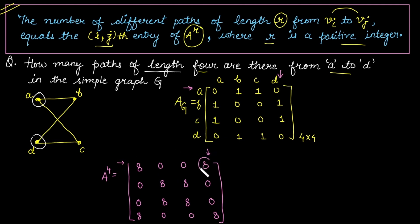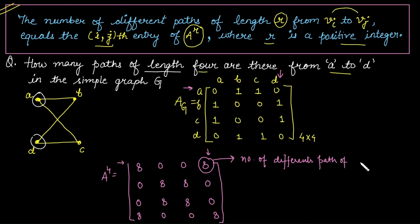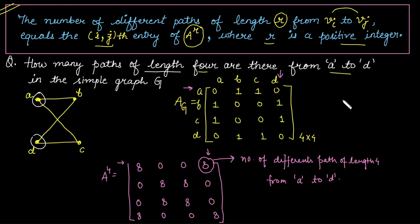The (1, 4) entry is the pivot element that gives the number of different paths. So the number of different paths of length 4 from vertex a to d in graph G is 8.